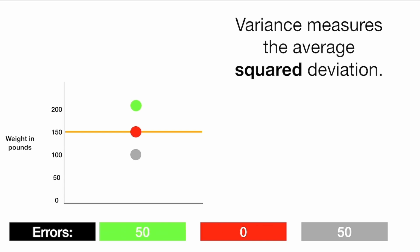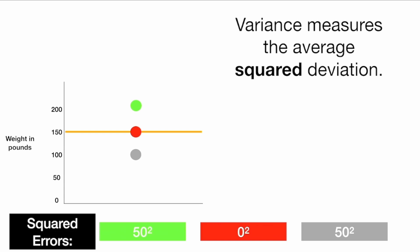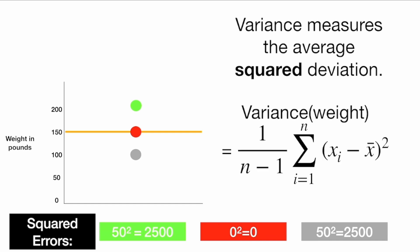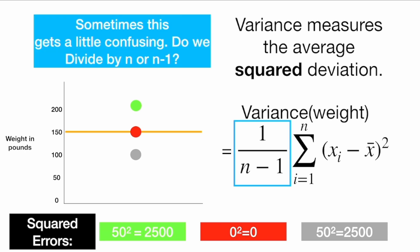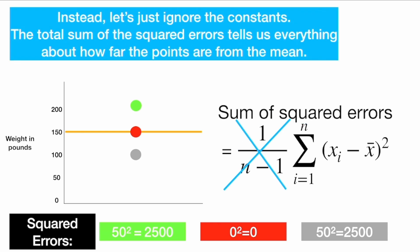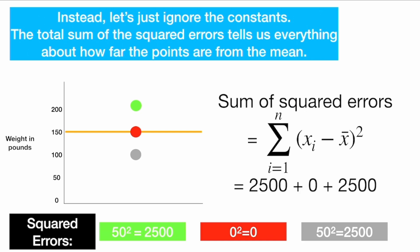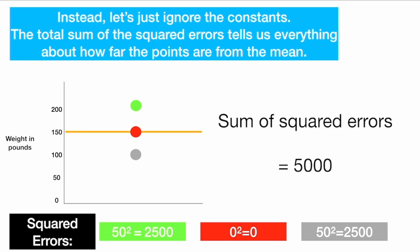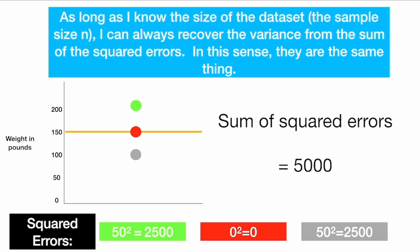Variance measures the average squared deviation, so let's square all those errors. We get 2,500, 0, and 2,500. The variance is the average squared deviation. For some technical reasons, sometimes we'll see this as 1 over n minus 1, and this gets confusing — do we divide by n or n minus 1? We could also calculate the standard deviation, which is the square root of the variance. Instead, let's just ignore the constants. The total sum of these squared errors tells us everything about how far the points are from the mean.